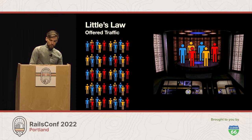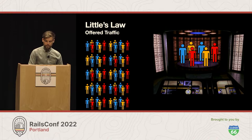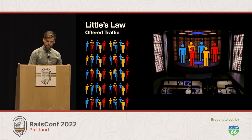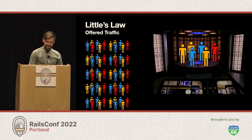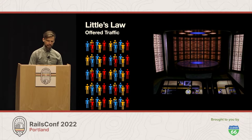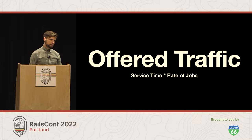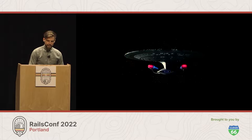Little's Law says: based on the service time and the rate of traffic, we can determine the offered traffic. In our case, with 8.3 beam-outs per second and it taking five seconds, we have an offered traffic of 41.5. It is the time it takes to process the work multiplied by the average rate of arrival. With 41.5 offered traffic and a five-second service time, we're going to need more than just one transporter to get everyone out to safety in time. Service time times the rate of jobs gives us our offered traffic.